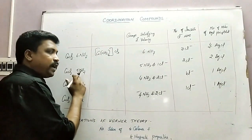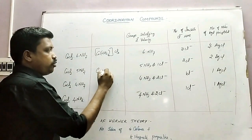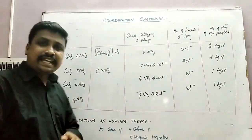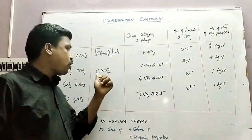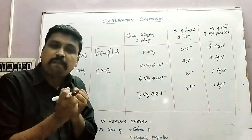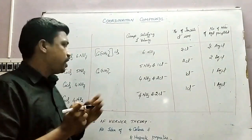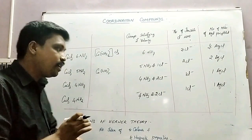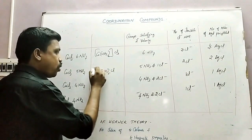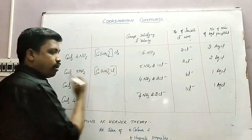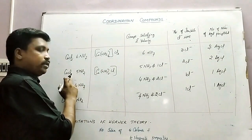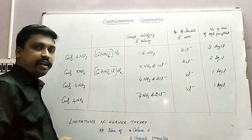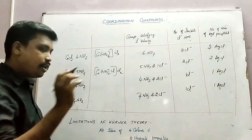Here there are only five ammonia molecules. The secondary valency of cobalt is six — it accepts six pairs of electrons. Since only five pairs are given by five ammonia molecules, the sixth pair will be given by one chloride ion. So the remaining two chloride ions will be present outside.